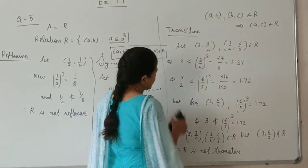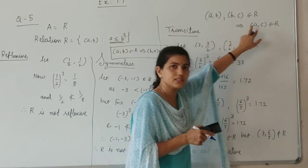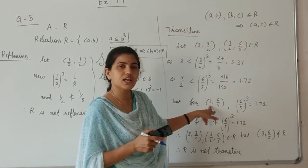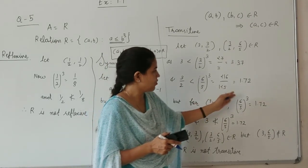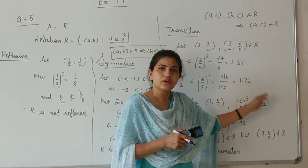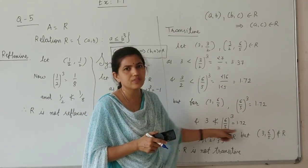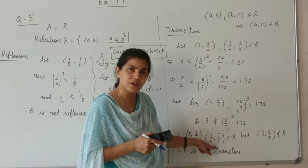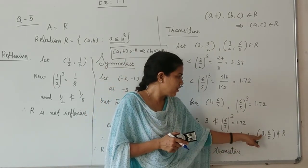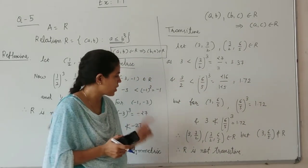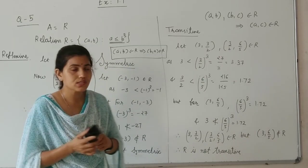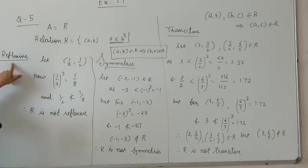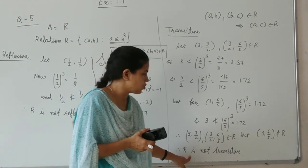Now the next element is (a, c), that is (3, 6/5). Let me check for (3, 6/5). Now (6/5)³ is approximately 1.72, and 3 is greater than 1.72. So (3, 6/5) does not belong to R. Therefore (3, 3/2) and (3/2, 6/5) belong to R, but (3, 6/5) does not belong to R. Therefore R is not transitive. So the answer is: the relation is not reflexive, not symmetric, and not transitive.